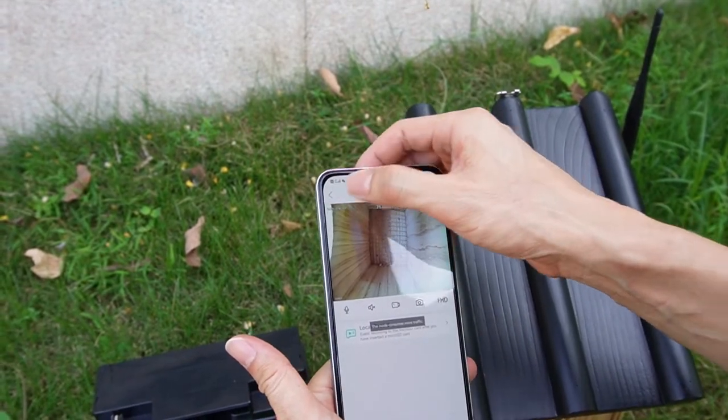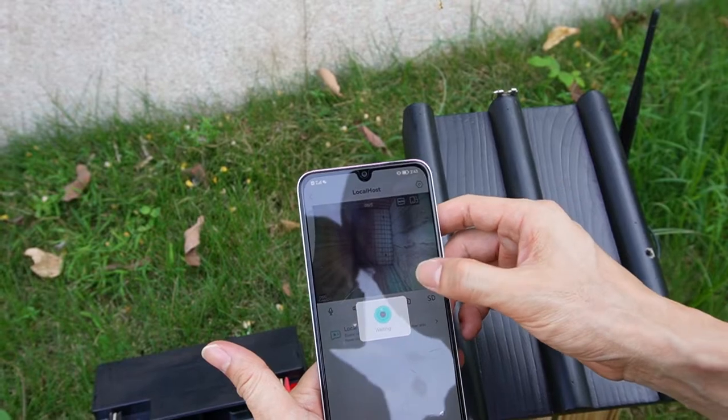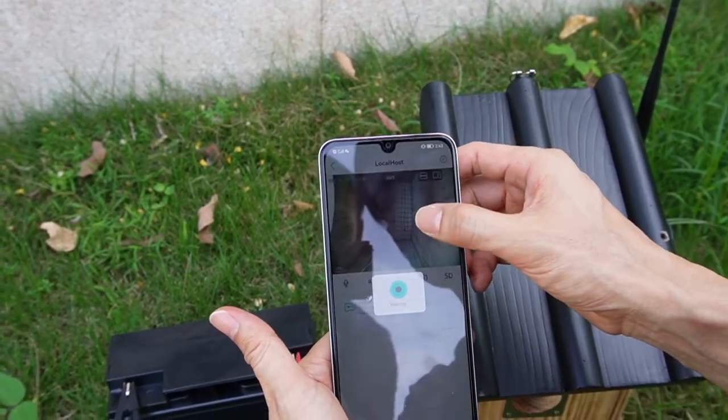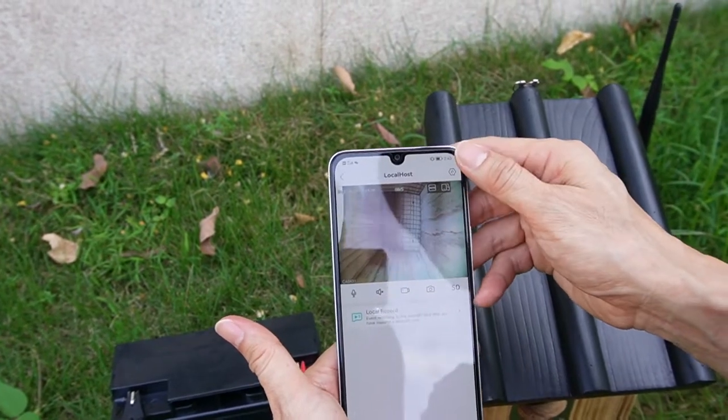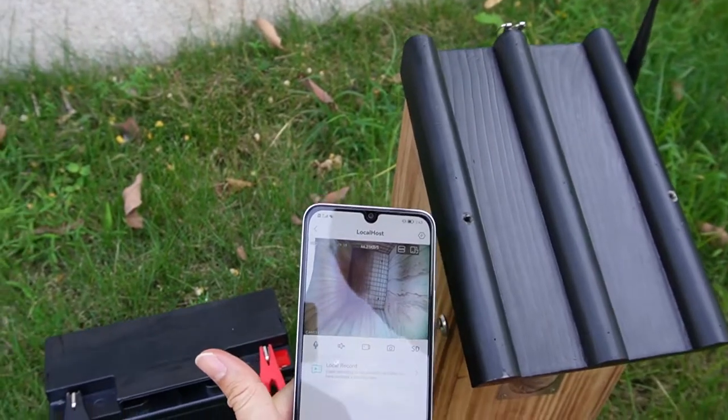I'm using the mobile, I'm using the 3G data. Now the camera is not connecting to the Wi-Fi, it's connecting to the 3G mobile data. Let's see whether the camera is live.